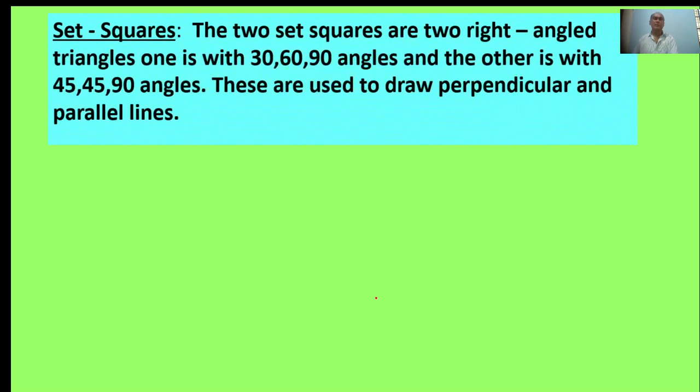Set square. The two set squares are two right-angle triangles. One is with 30, 60, 90 degrees and the other is with 45, 45, 90 angles.